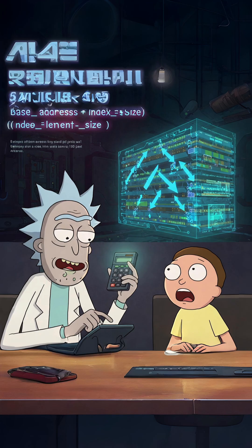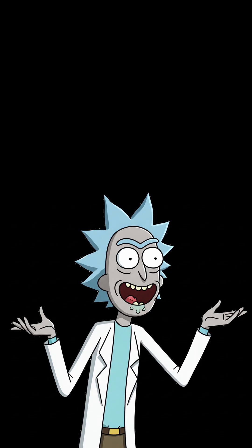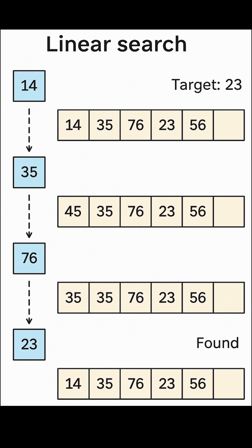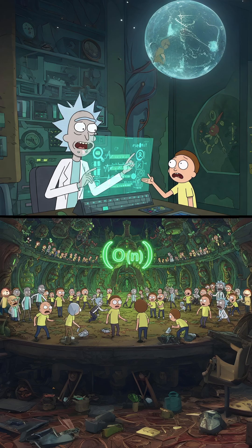What about searching, Rick? How do we find something if we don't know where it is? In a regular unsorted array, you're basically screwed, Morty. You have to check every damn element until you find what you're looking for. That's linear search — O(n) time complexity. It's like searching for a specific Rick in the Citadel without any organization.